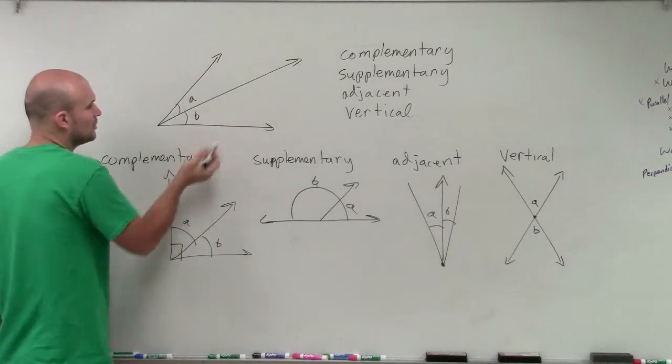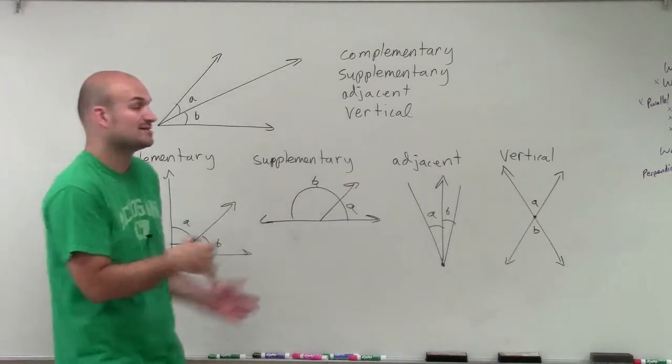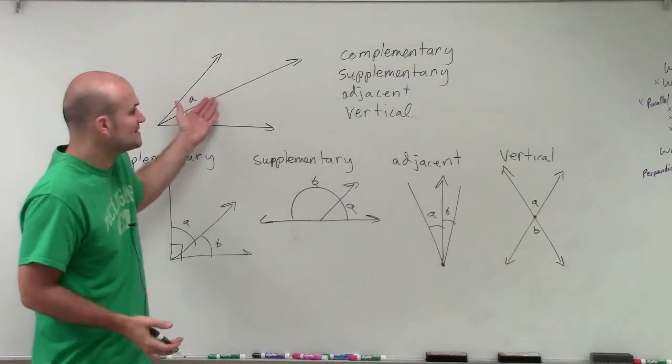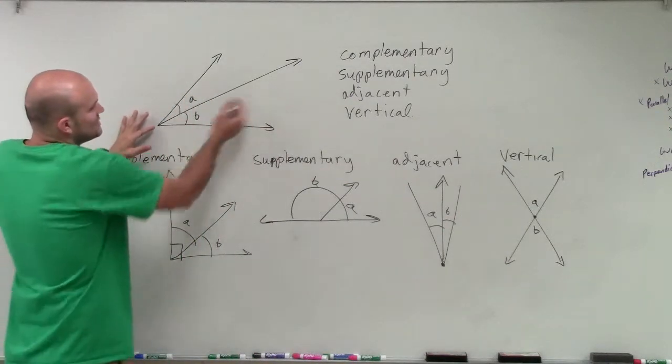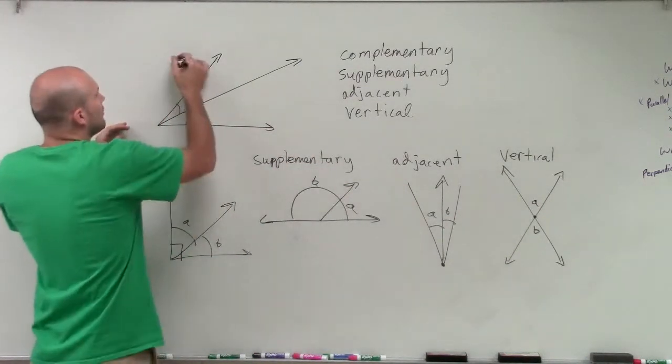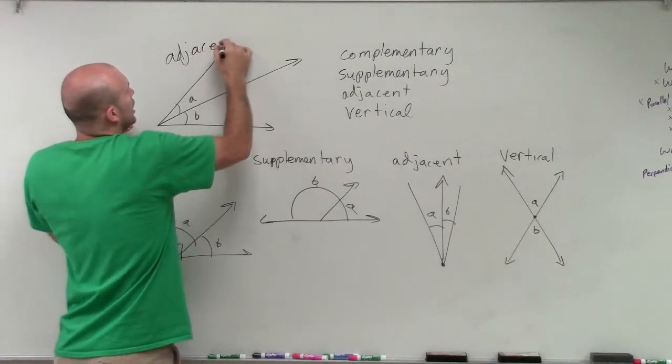Now in this example, we don't have any measure, so we can't determine if it's complementary or supplementary, because it's not saying what the measure of these are. Vertical, we're not seeing an intersection. Well, we see that they share a side, so we know it can't be vertical. So therefore, these two angles, A and B, have to be adjacent.